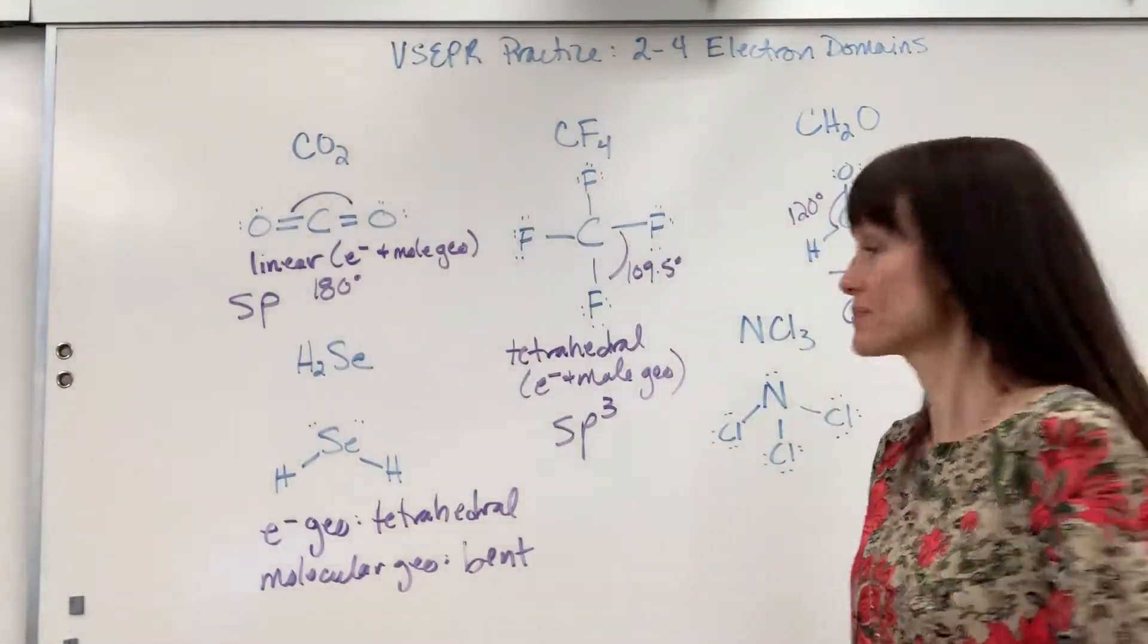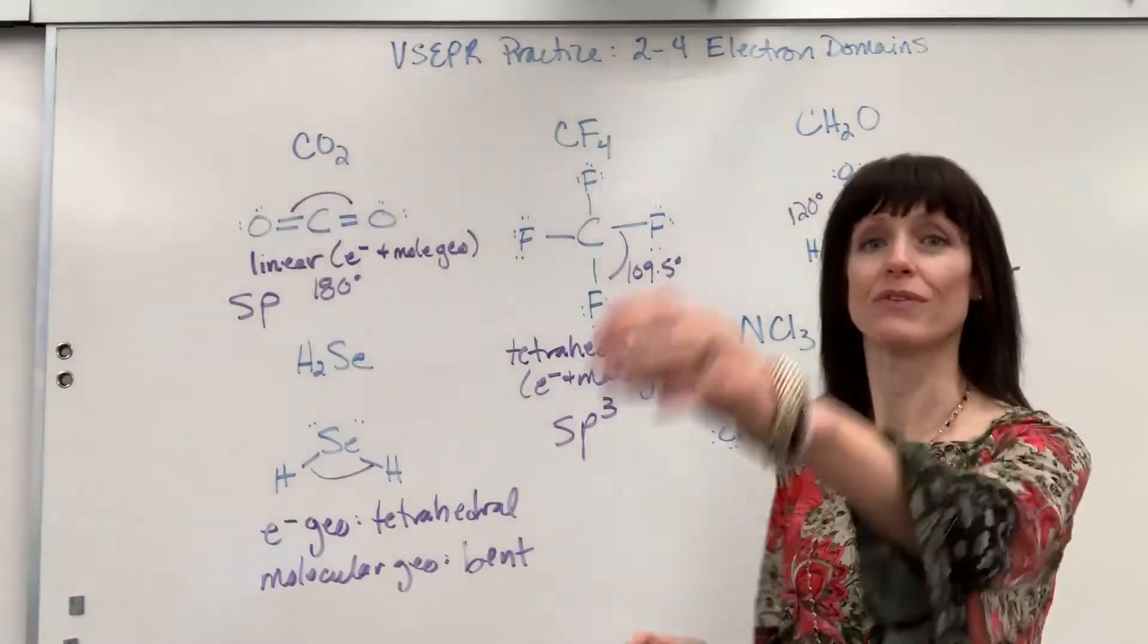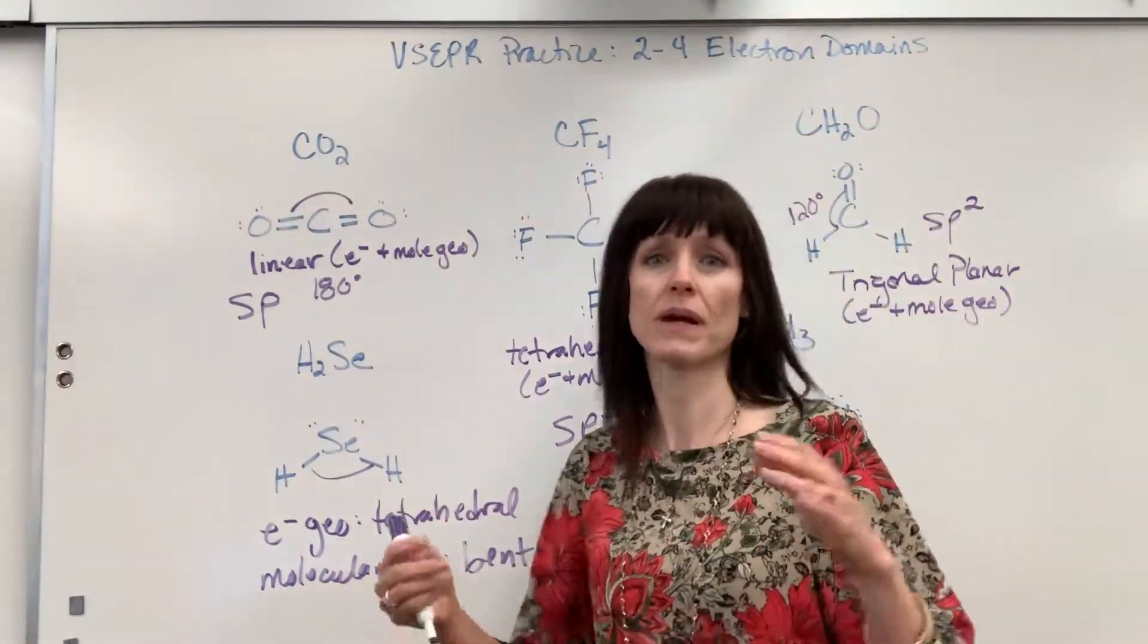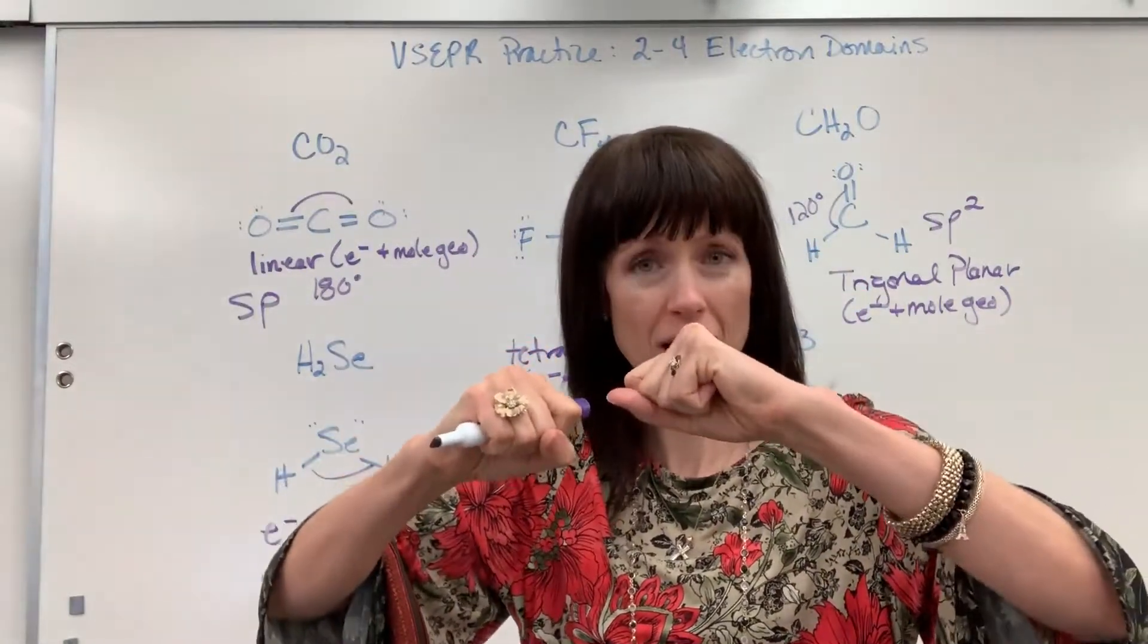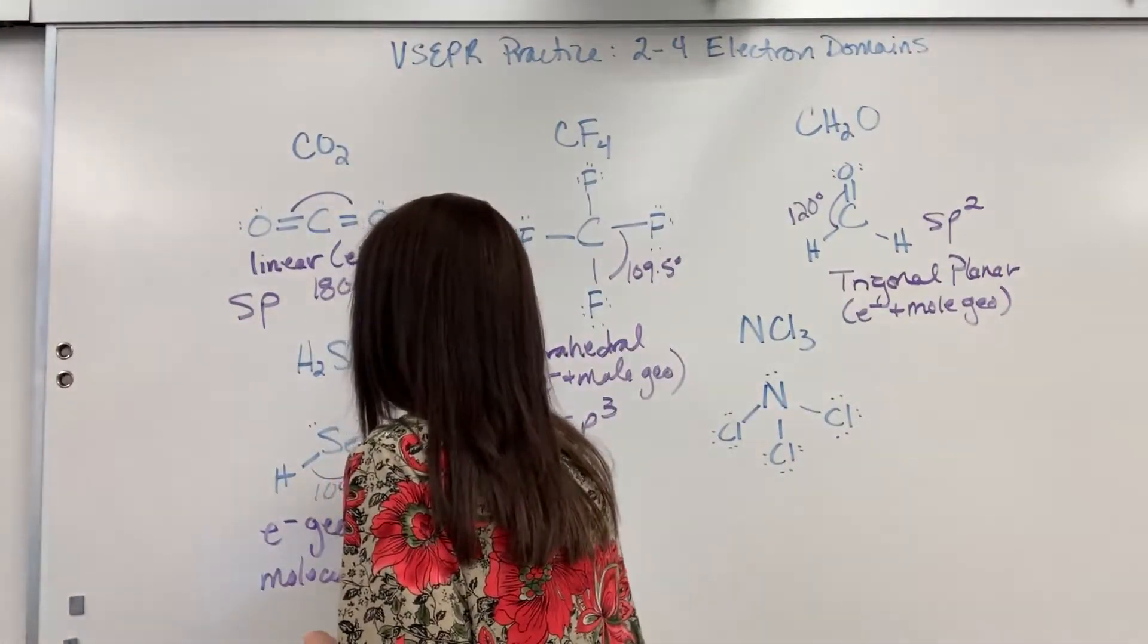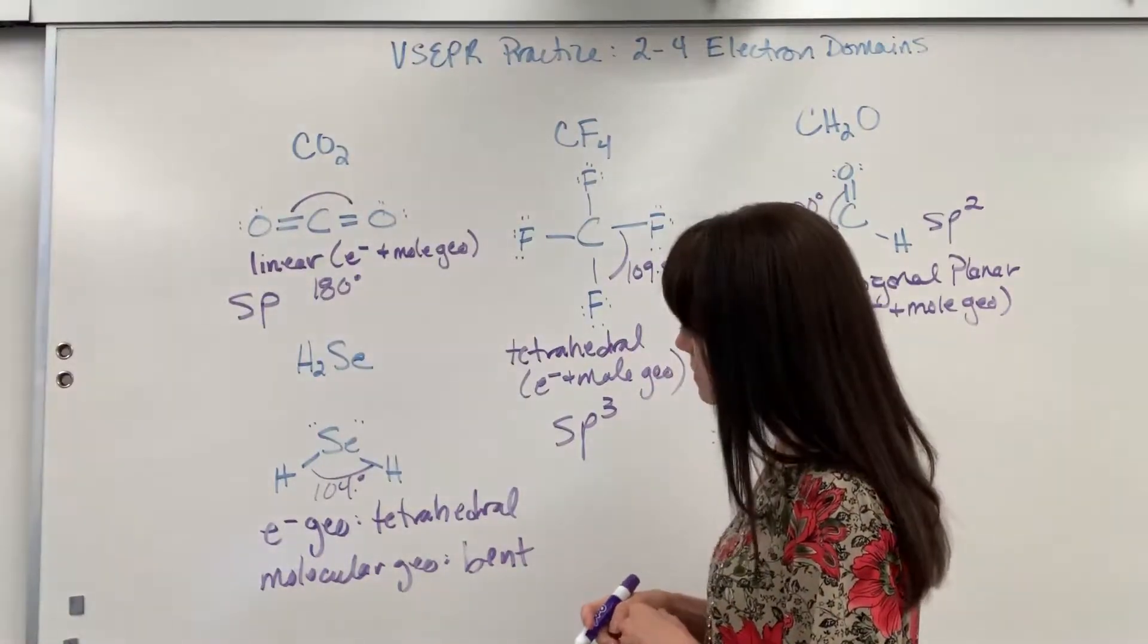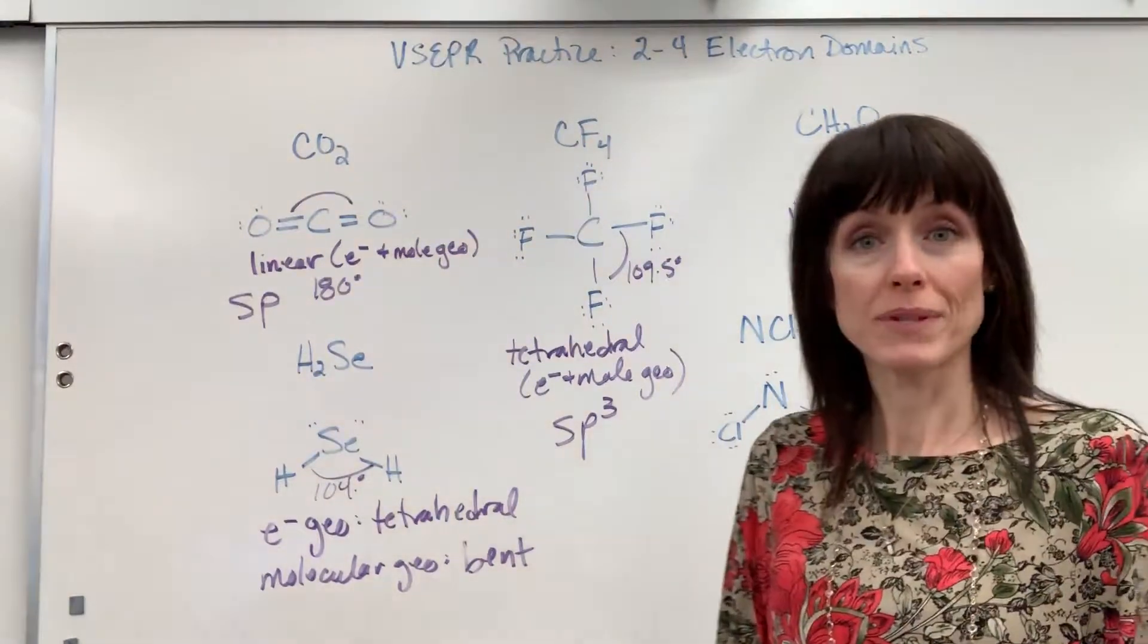All right, now the angle. So you know that on tetrahedral, when we've got four bonds, it's 109.5. Well, I now have two lone pairs that are closer to that central atom, and they have a greater ability to repel and push those hydrogens away. So this is smaller. It is 104 degrees.